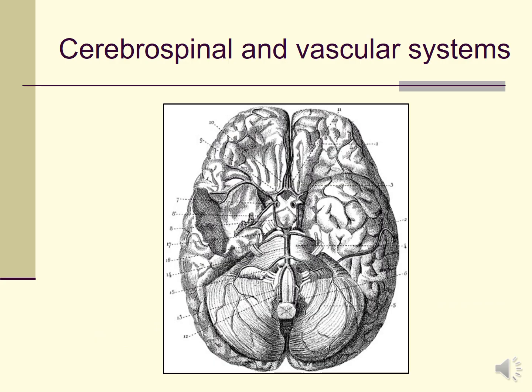That was a look at the microscopic and molecular level of the human nervous system — not comprehensive, but hopefully a useful review connected to specific disorders or conditions. Now let's go back to a more macroscopic structural level and look at another aspect of the nervous system: the cerebrospinal and vascular systems that support the human nervous system, especially the central nervous system and especially the brain.